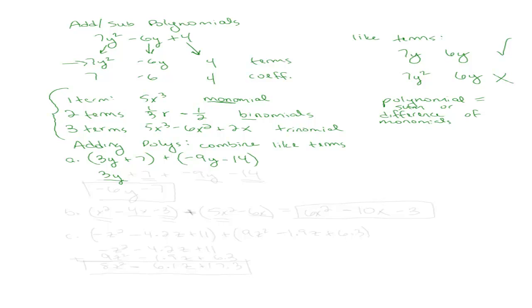For example: 3y plus 7 plus negative 9y minus 14. The like terms are 3y and negative 9y, and then 7 and negative 14. With 3 and negative 9, I add up the coefficients and keep the same variable. 3 minus 9 is negative 6, so negative 6y. And 7 plus negative 14 gives negative 7. That's it — I added the two polynomials together by combining like terms.